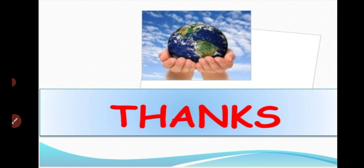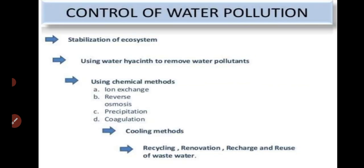To control water pollution, which has now become a worldwide problem affecting both developing and developed countries, several methods have been initiated. Prevention measures include using water hyacinth to remove water pollutants, as well as chemical methods such as ion exchange, reverse osmosis, precipitation, and coagulation. Recycling, recharge, and reuse of waste water are also very important measures.